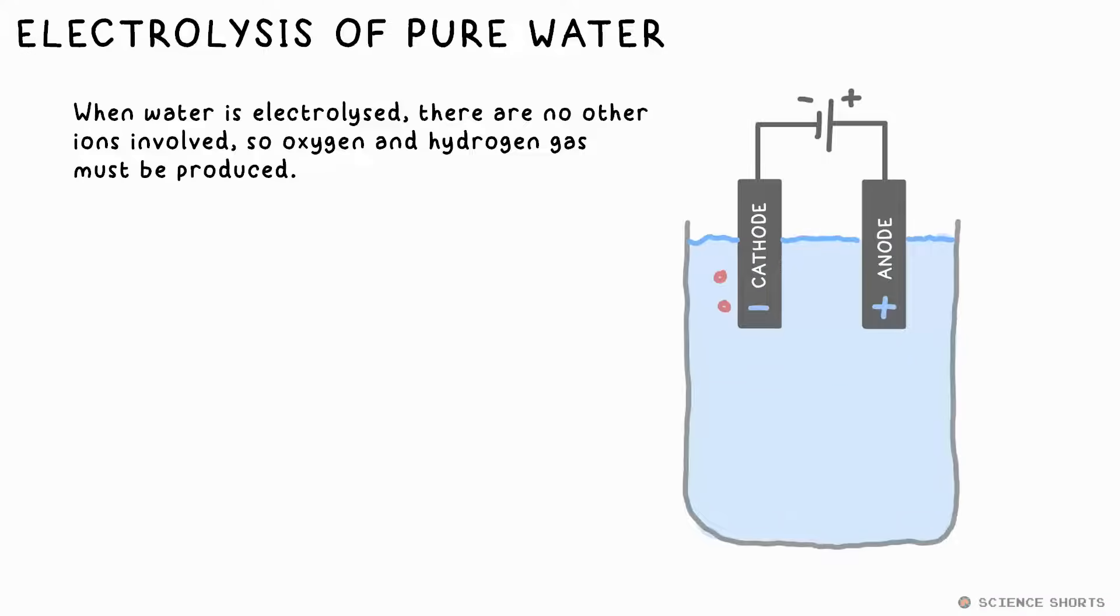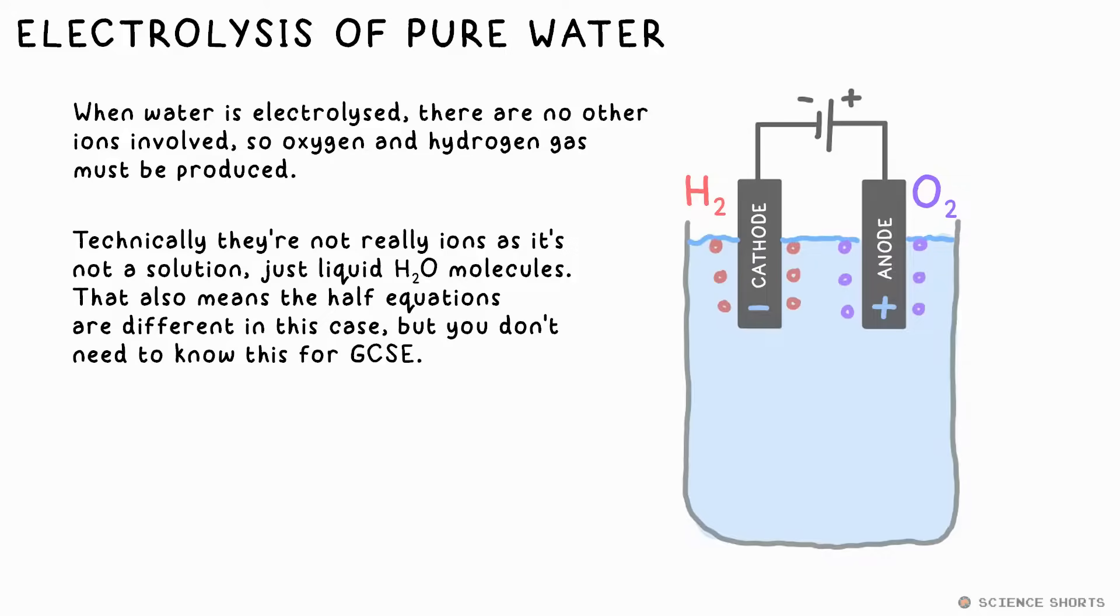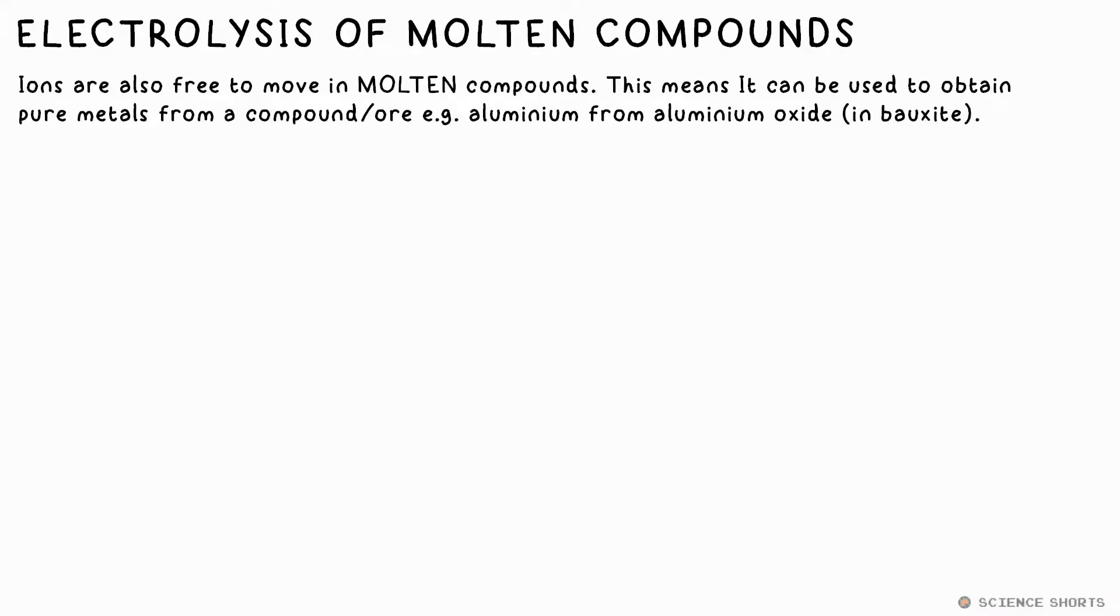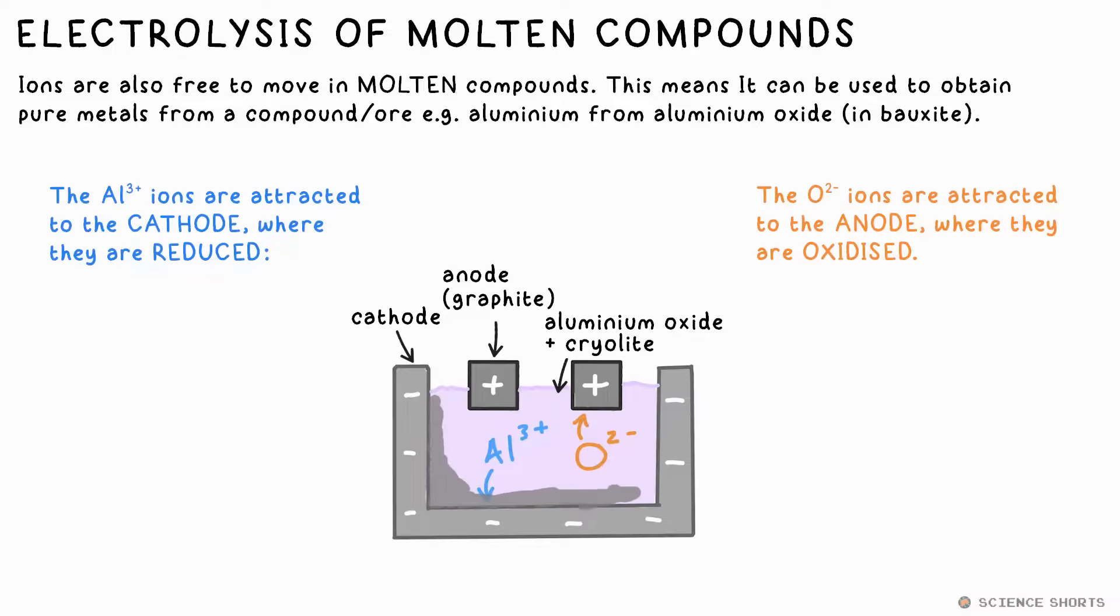Well done if you got that right. What's interesting is that if you just electrolyze pure water, the H+ and OH- ions aren't competing with anything else, so they have to be reduced and oxidized, making hydrogen gas at the cathode and oxygen gas at the anode. This is the most common method of making these gases. Don't forget that you can test for what gas is produced from electrolysis using the standard gas tests. Ions are free to move when an ionic compound is dissolved in solution, but they're also free to move if the ionic compound is molten too. No water is needed.